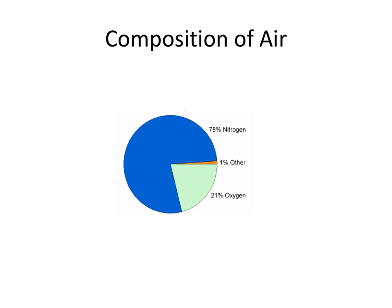So this is a pie chart which I've just pilfered off the internet. You will see that the majority of the air, 78%, is made up of nitrogen, and 21% is made up of oxygen.